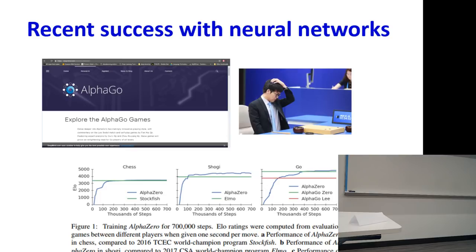But that wasn't using deep neural networks. People were trying to play chess with deep neural network-based systems, and one of the big names trying to get this done was our own Dean, Andrew Moore, back in the day. But then the next challenge came up, which was Go.